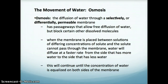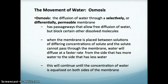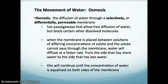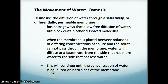Osmosis is the diffusion of water through a selectively permeable membrane — one that is permeable to water. Water can move either inside or outside of the membrane, but the larger solutes are stuck on whatever side they are on. So when a membrane separates a solution with lots of solutes and little water from one with lots of water, the water will diffuse but the solutes won't. The water moves to the area with more solutes to dilute them, continuing until the water concentration is equalized on both sides.